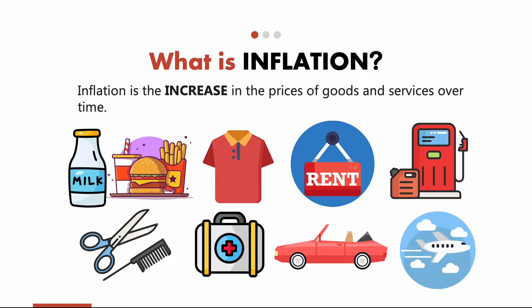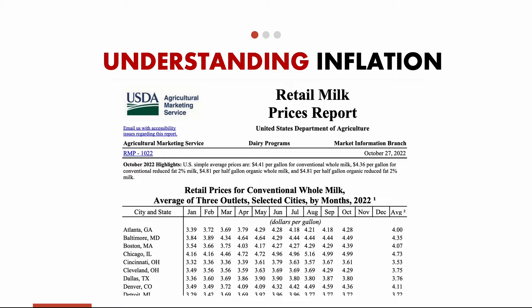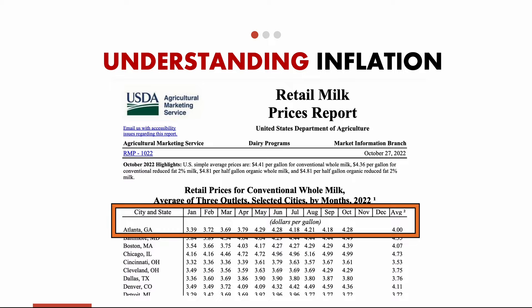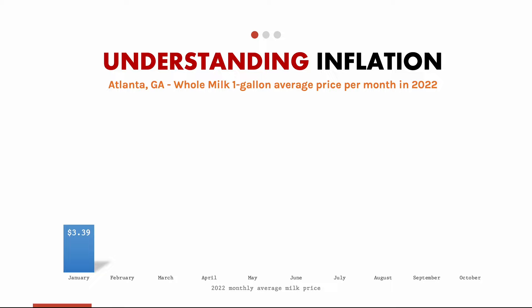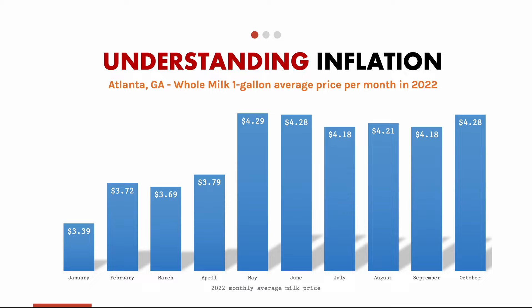Let's understand inflation by taking an example of milk prices over time. This is the USDA report on whole milk prices for various cities over the first 10 months of 2022. Let's take Atlanta, Georgia as an example. Going month by month: $3.39 in January, $3.72 in February, $3.69 in March, and finally $4.28 in October.